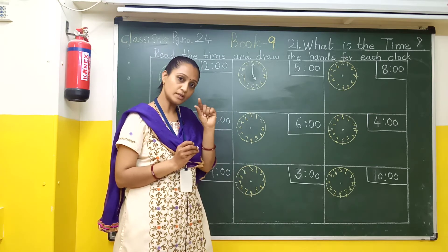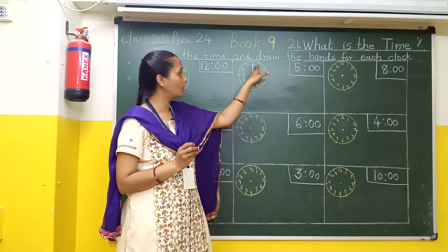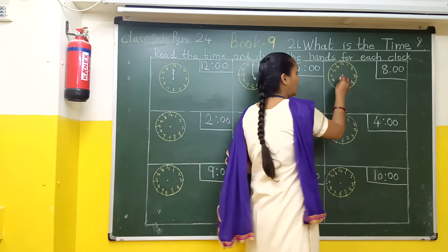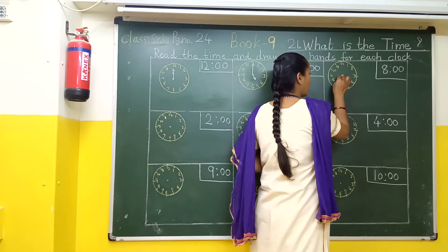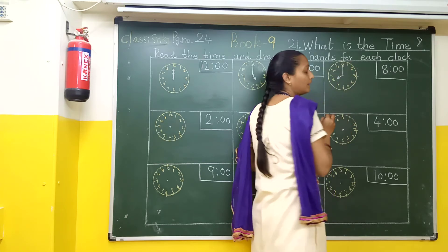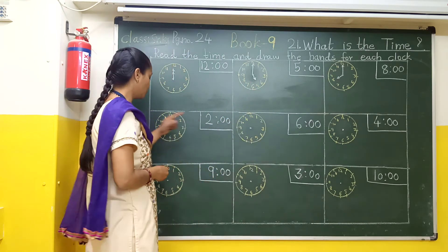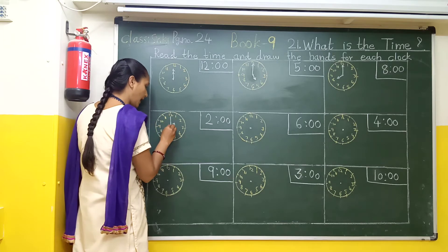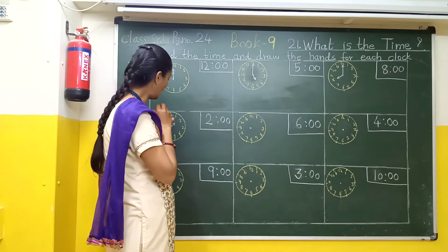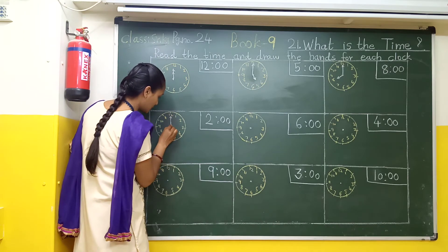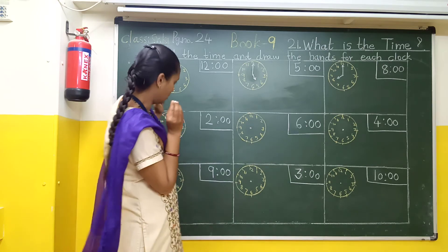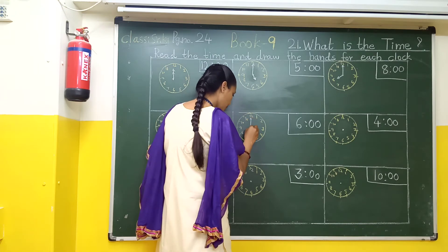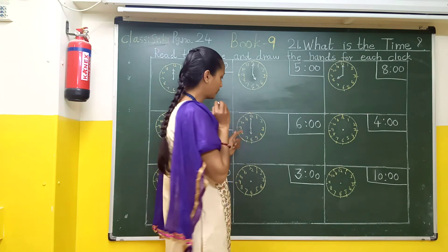You will take the help of a scale. Now you will also draw number 2 o'clock. After that you will draw 6 o'clock. The big hand is on 12 and the small hand is on number 6.